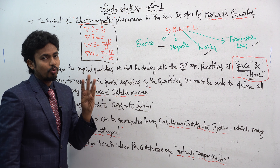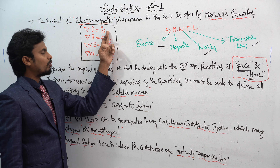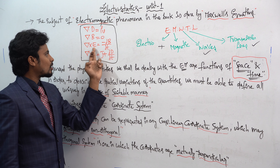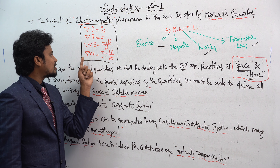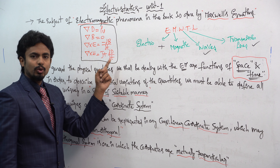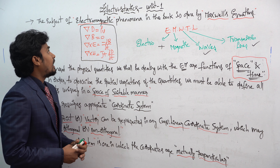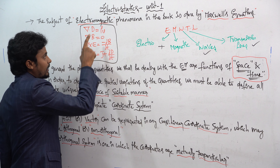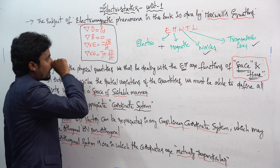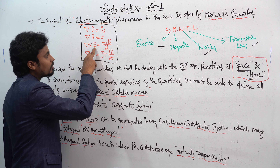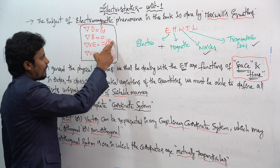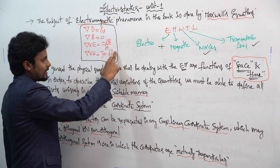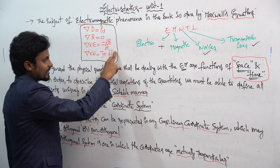All the analysis in electrostatics and magnetostatics was finally concluded into four equations: ∇·D = ρv, ∇·B = 0, ∇×E = −∂B/∂t, and ∇×H = J + ∂D/∂t. Here D is electric flux density, ρv is volume charge density, E is electric field intensity, H is magnetic field intensity, and J is current density.